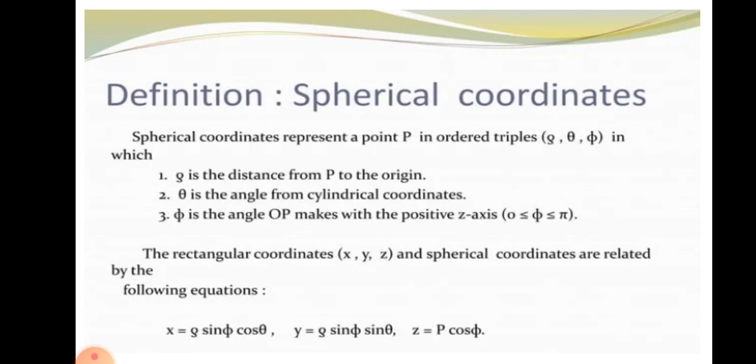The rectangular coordinates X, Y, Z and the spherical coordinates are related by the following equations. We have X is equal to ρ sine φ cosine θ, and Y is equal to ρ sine φ sine θ.